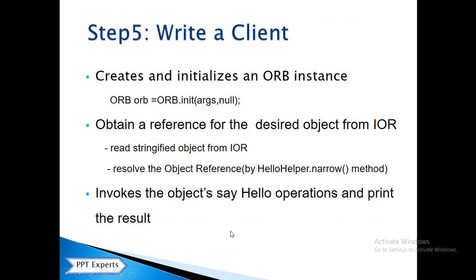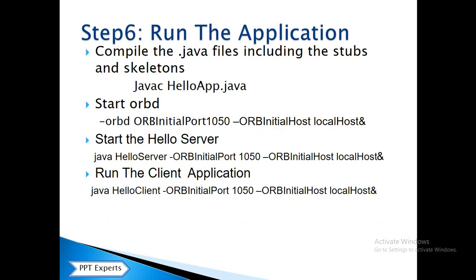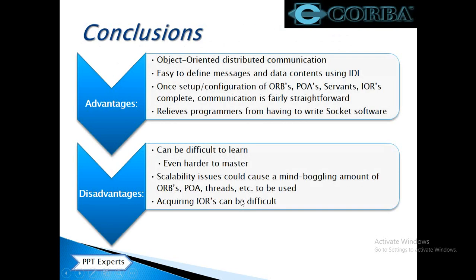Write the client side: first, initialize an object, stringify the references, invoke the object, call the say-hello operation, and print the result. Run the application by compiling the .java files, start the Object Request Broker at port 1050, start the Hello Server at port 1050, and run the client application.